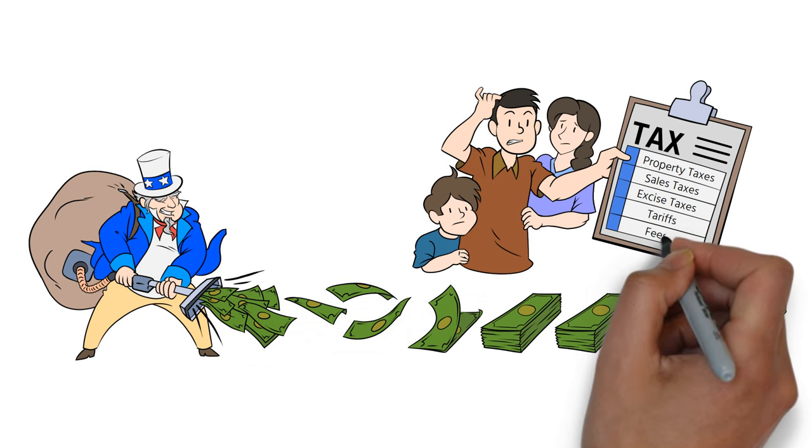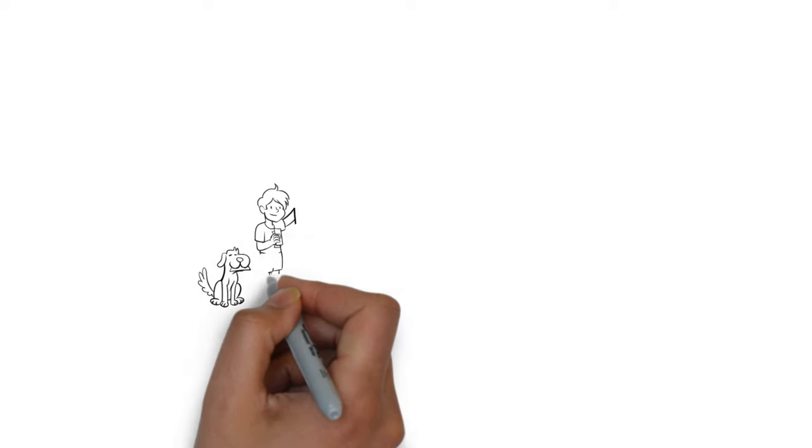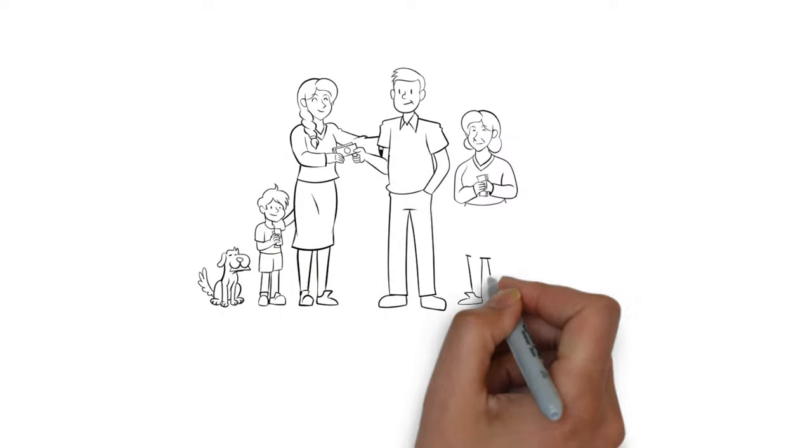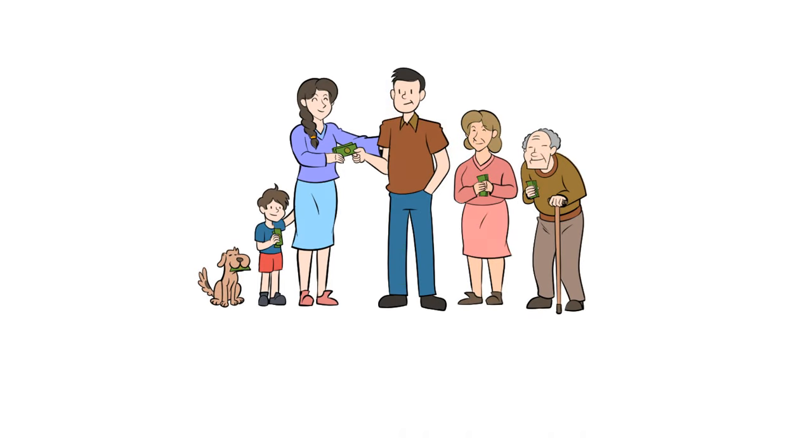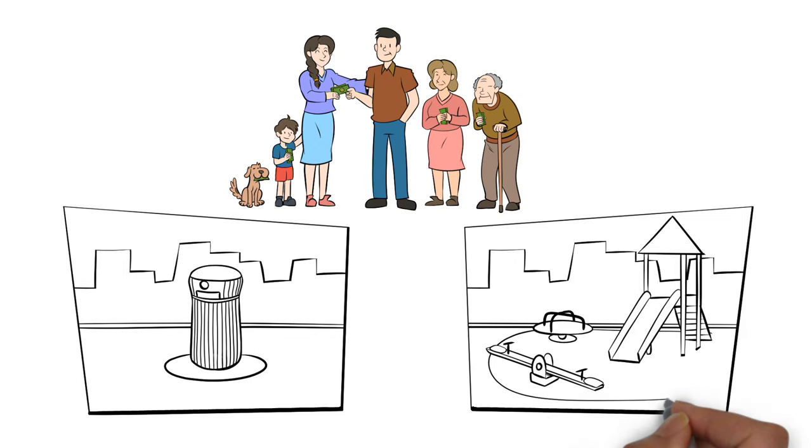And this doesn't even include the many fines and fees levied by government agencies or the so-called inflation tax. But it is enough to ask one simple question. How would an additional $30,000 per year change your family's life? Would you voluntarily spend it on things like custom-made trash bins?